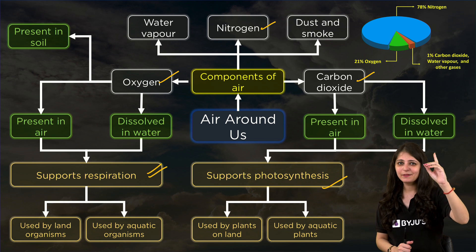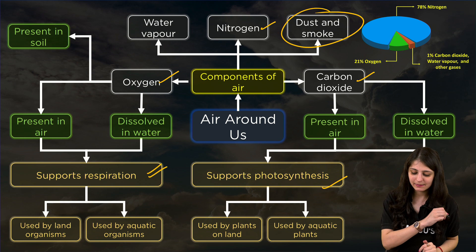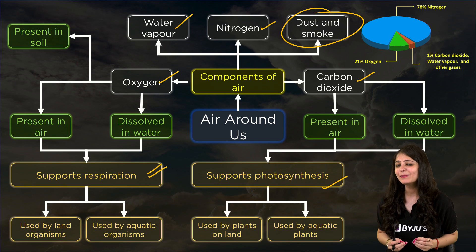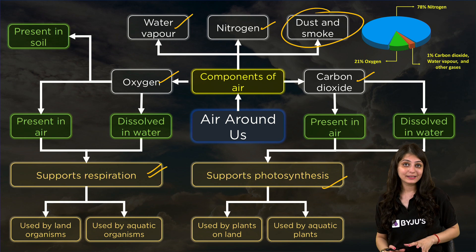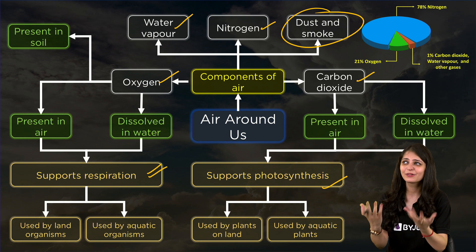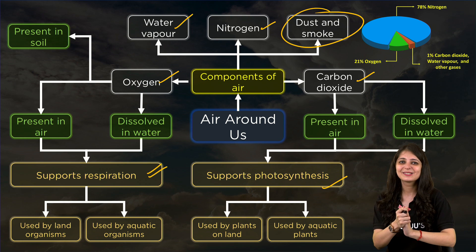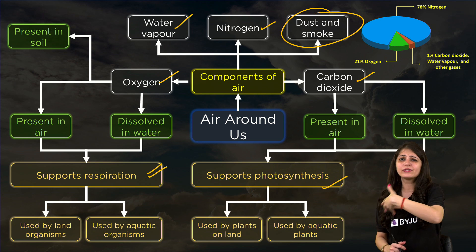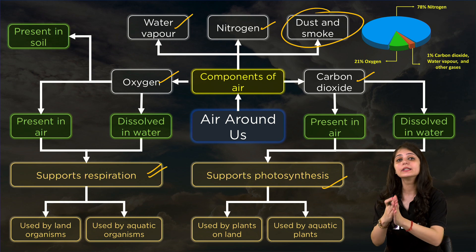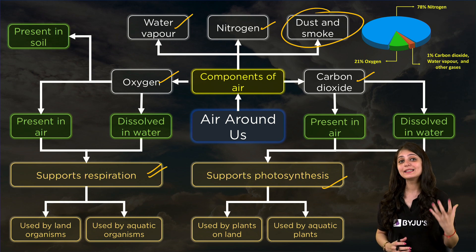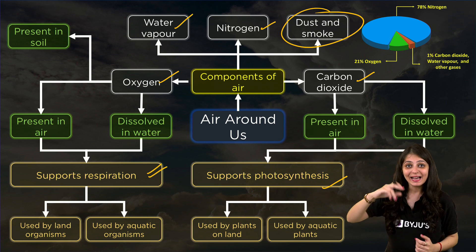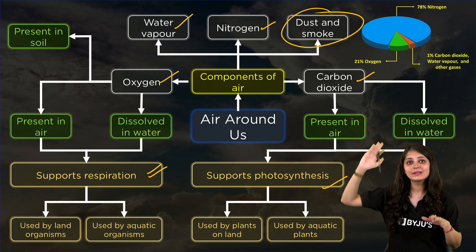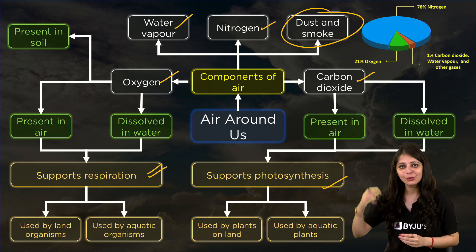Coming to the final components — smoke and dust. Although they are present in very tiny amounts in the atmosphere, they can cause pollution and are harmful to living organisms. Smoke is a mixture of various gases produced during the burning of fuel. It can usually be seen coming out of chimneys, and that is the reason chimneys are made very tall — so that the smoke cannot reach us at ground level.